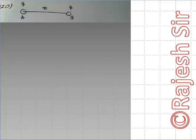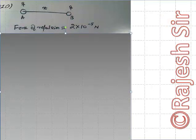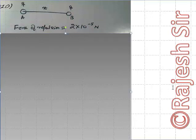I have to find out the net electric force on metallic sphere C which is placed in between A and B. Here you can see I have taken a metallic sphere A having charge Q and another metallic sphere B having charge Q. These spheres are separated from each other by a distance of x. As per the question, the force of repulsion between the two spheres happens to be 2×10⁻⁵ Newton. Coulomb's law states the force of attraction or repulsion between any two charged bodies.